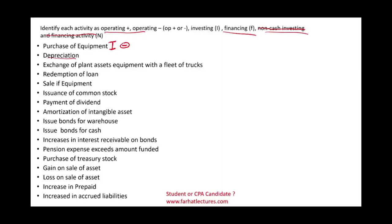The second item is depreciation. We purchased the equipment or plant asset, and now we depreciate it, taking depreciation expense. Under which category do we list depreciation expense? Here we are assuming the indirect method. The answer is all expenses, because they are income statement accounts, they go on the operating section. Depreciation expense is added under the operating section.